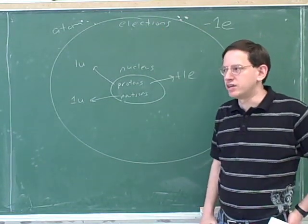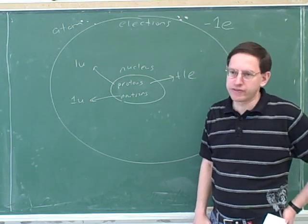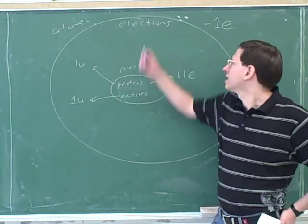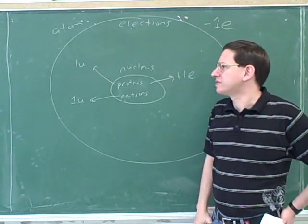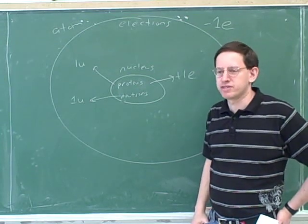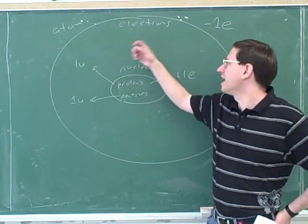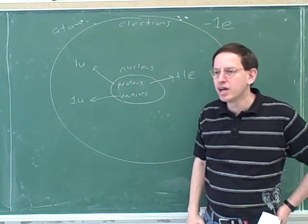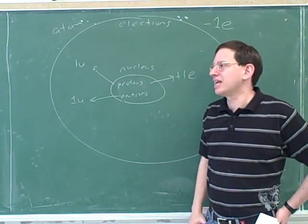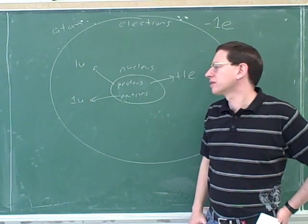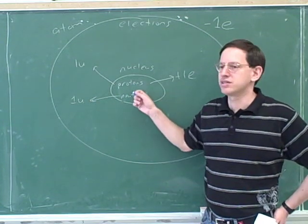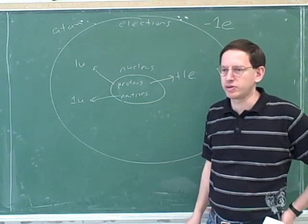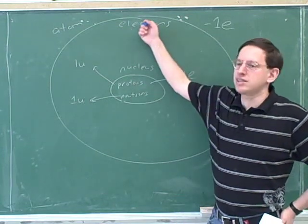The mass of an electron, if you look that up in your inside front cover, it's 9 times 10 to the negative 31 kilograms. Actually 9.11 times 10 to the negative 31 kilograms. Which means that it is far smaller than the mass on the protons and the neutrons, because those are around 10 to the negative 27. In fact, it's around 1,800 times smaller.